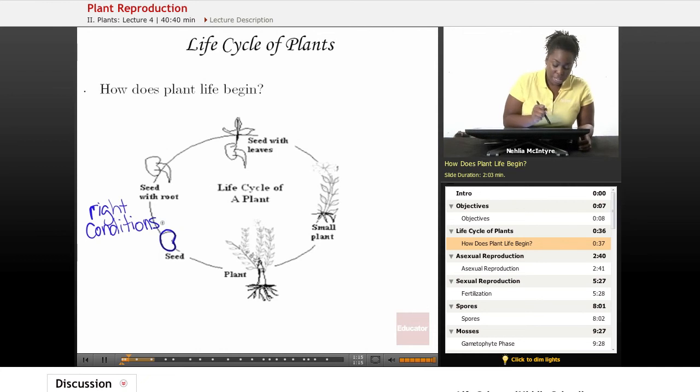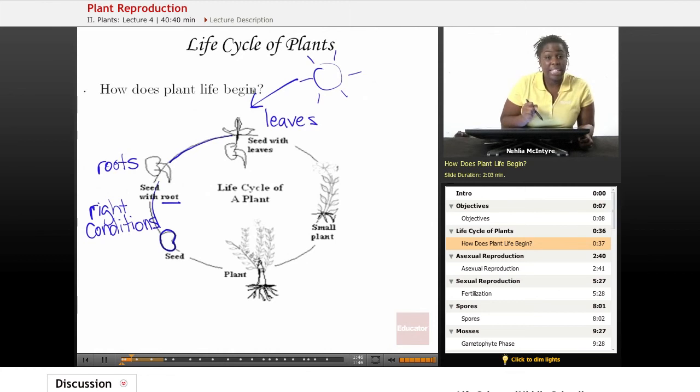The first stage is usually when the seed begins to grow roots. Those roots help anchor the plant into the soil so that it can be stable and grow properly. Once those roots are formed, we move on to the seed developing leaves, because those leaves are going to catch the sunlight energy that the plant needs to live.